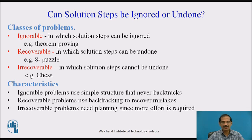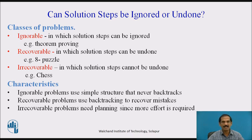Irrevocable problems are those in which the solution cannot be undone. For example, if we take a move in chess, we cannot go back — we have to go forward, which might never lead us to a particular goal. Therefore, ignorable problems have simple structure and never backtrack; recoverable problems use backtracking to recover mistakes; and irrevocable problems need planning since more effort is required.